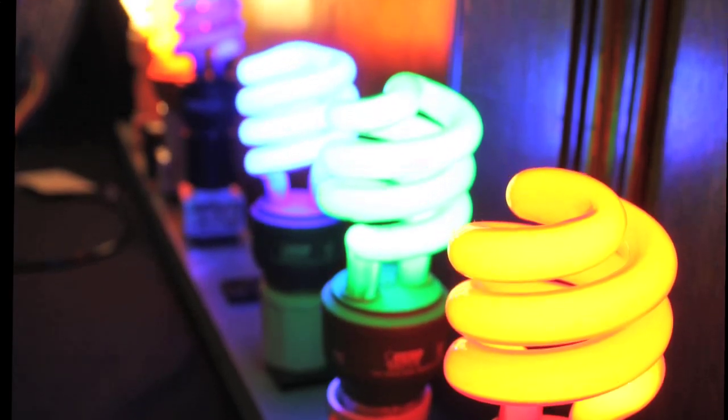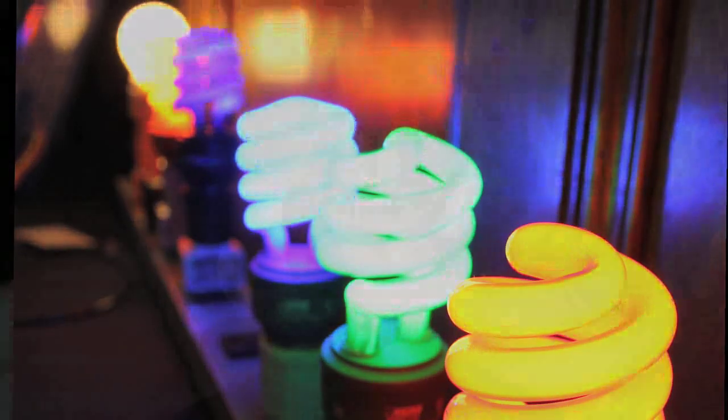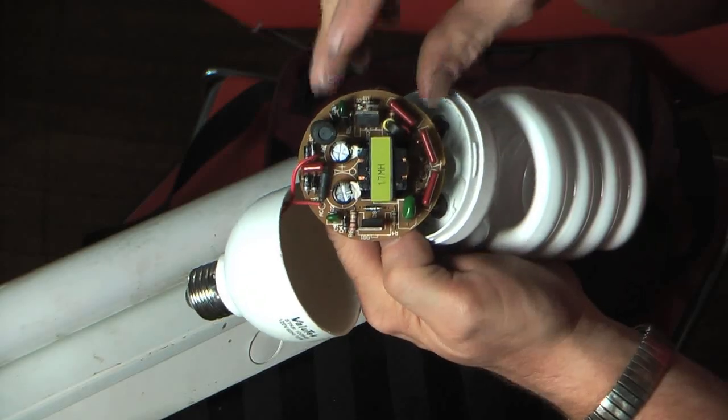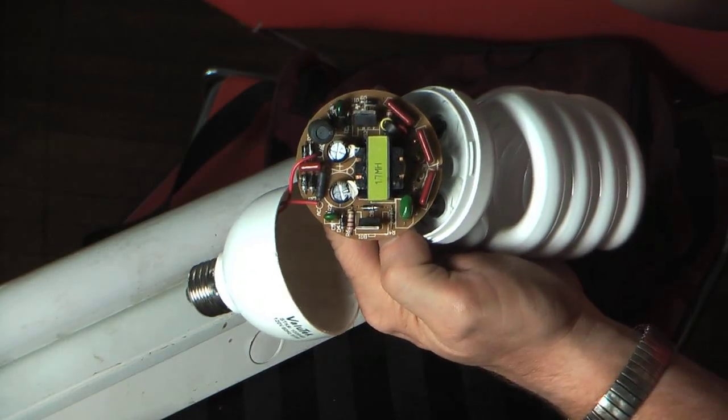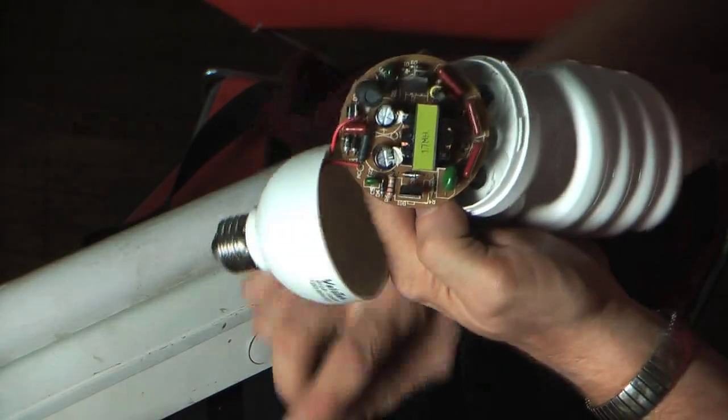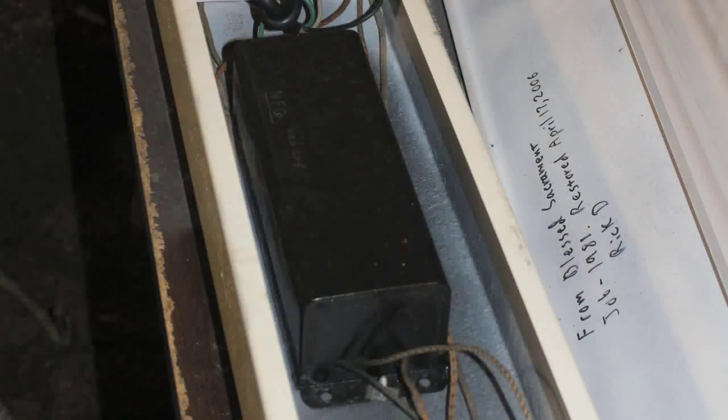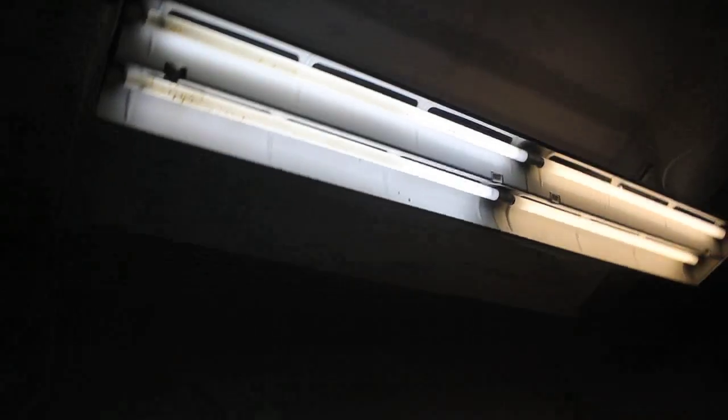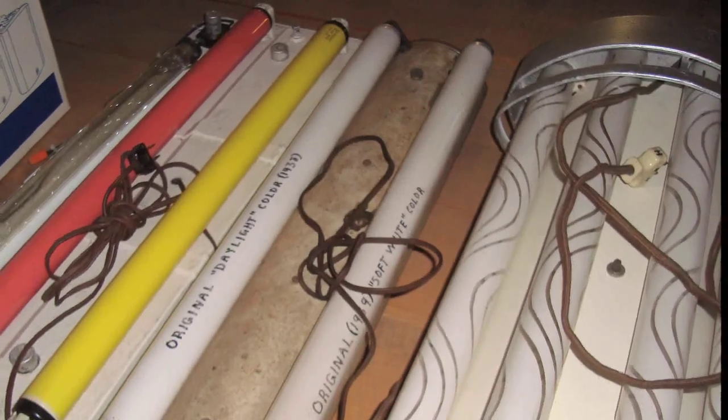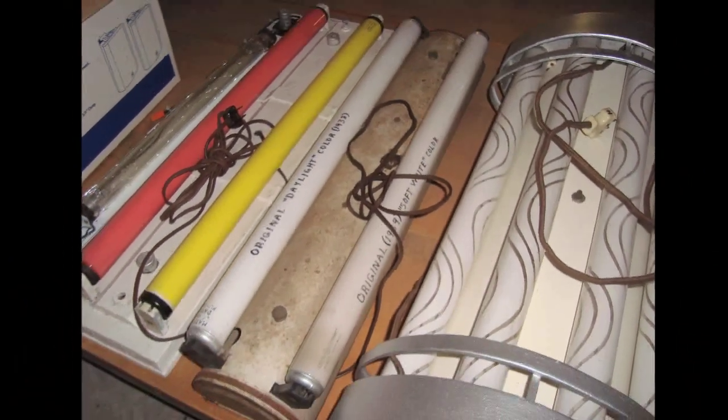And where a ballast, its efficiency is judged by how much losses it has. Because the ballast has to limit the current to the lamp and in doing so, some of the energy has to be lost in the ballast. It's just the laws of physics. So the losses of a ballast are expressed in watts. For example, a two lamp ballast like this one, preheat one, will lose about maybe 15 watts of power to run two 40 watt lamps. So that ends up being about 85 watts or so of total current consumption for the two lamps and ballast.